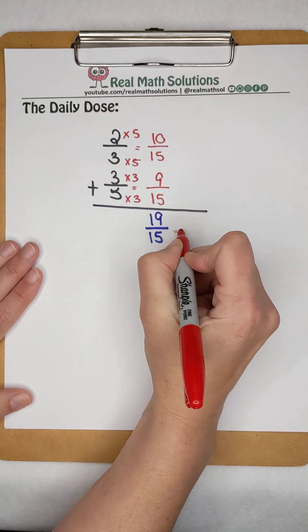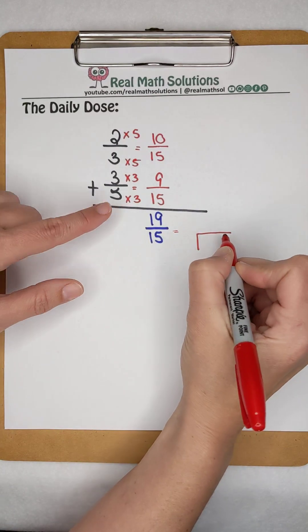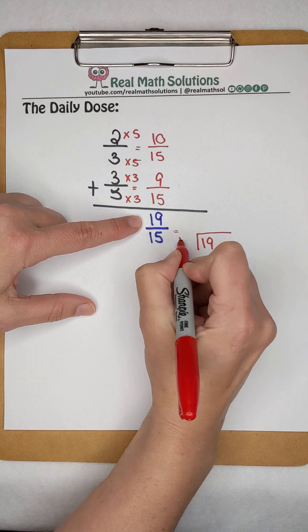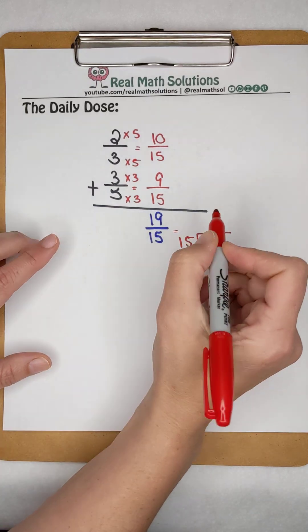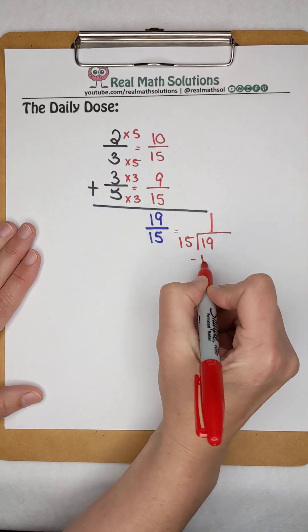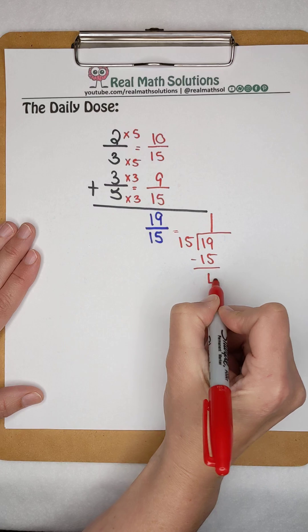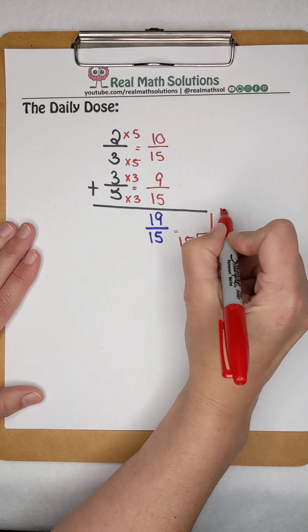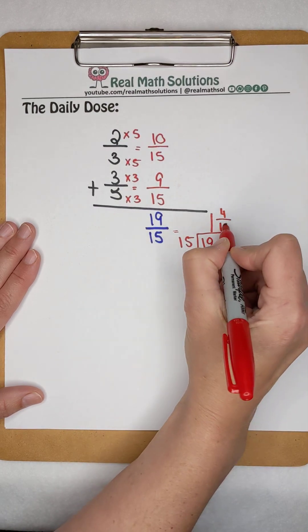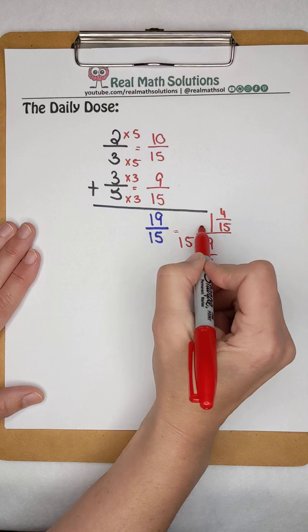19 15ths is an improper fraction, so I'm going to divide to make that a mixed number. I'm going to have 19 divided by 15. 15 goes into 19 once, and when I subtract, that gives me a remainder of 4. The remainder of 4 becomes our numerator, and our denominator stays the same.